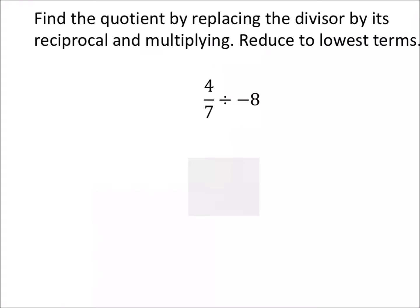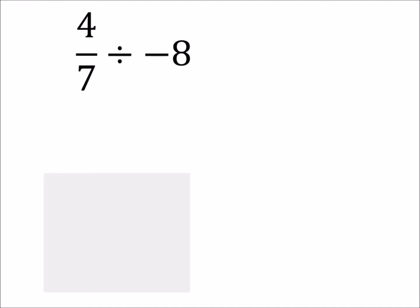Find the quotient by replacing the divisor by its reciprocal and multiplying, reduced to lowest terms. One of the problems with this one is we kind of forget which one's the divisor. And if we remember, sometimes we forget that it's really negative 8 over 1. So just be careful on these types. This is how we would do any division problem like this anyway.